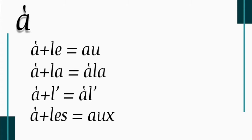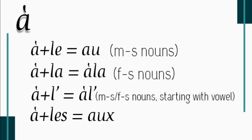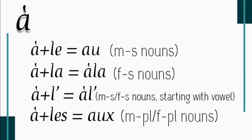Au is used with masculine singular nouns. À la is used with feminine singular nouns. À l' is used with masculine singular or feminine singular nouns that start with a vowel — that means singular nouns starting with a vowel. And aux is used with plural nouns; it could be masculine plural or feminine plural.